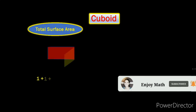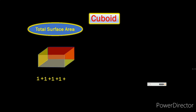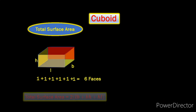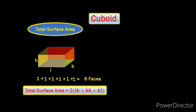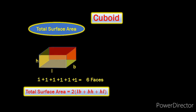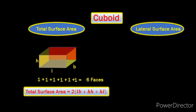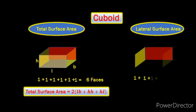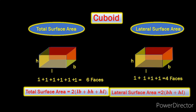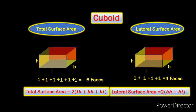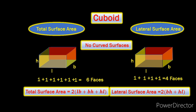Now for a cuboid, we will use the same logic as a cube except that here you have length, breadth and height. So the total surface area will be modified as 2 times (LB + BH + HL). And for lateral surface area, again we will only include the four lateral faces and the formula will be 2 times (BH + HL). Just like a cube, a cuboid doesn't have any curved surface area.